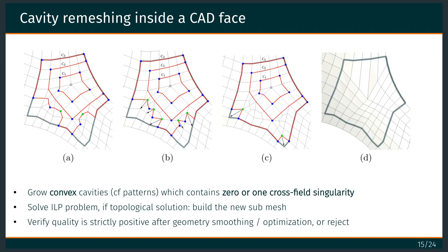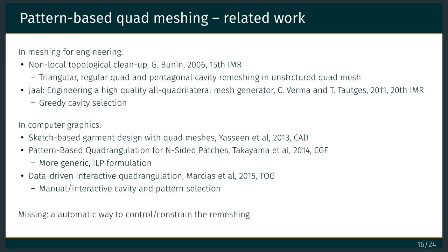It's not a new idea — it has been done in the past — but what was missing in our opinion is there was no real control. It was applied in a greedy way, and when you do this, you progressively move the irregular vertices. Even if you reduce the number, you kind of destroy the global structure.